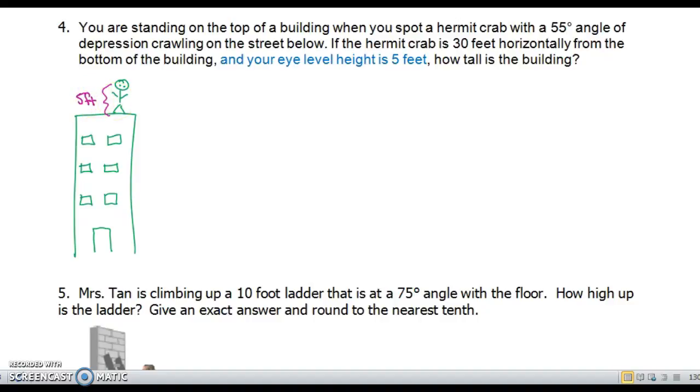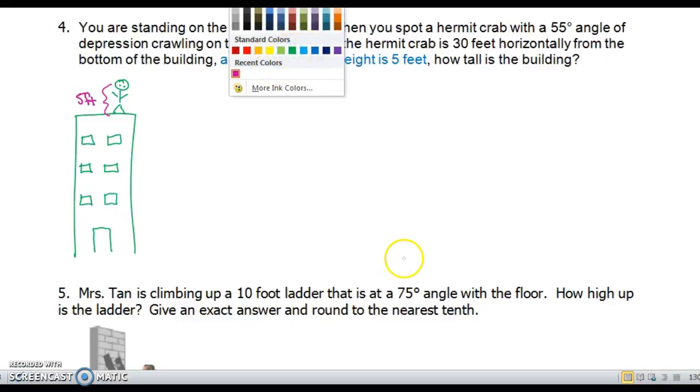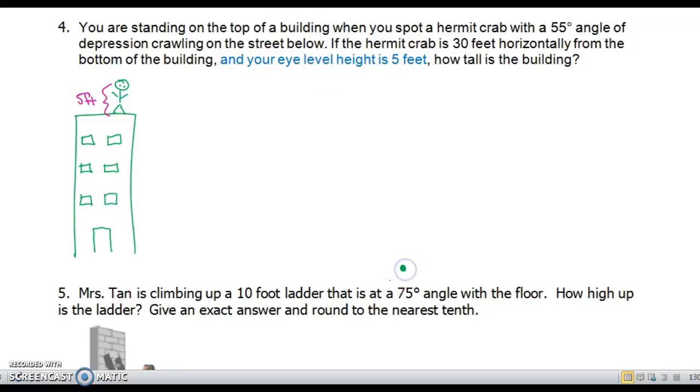And then it says that you spot a hermit crab on the ground, so I'm just gonna put that here because I can't draw a hermit crab. And it says that you spot the hermit crab with a 55 degree angle of depression, so now I'm gonna draw from my eyes to the hermit crab a dashed line, okay. And it says that the hermit crab is 30 feet horizontally from the building, so that would be this horizontal distance, okay.